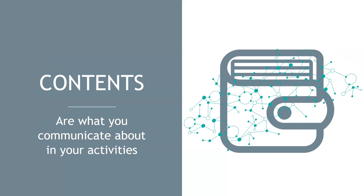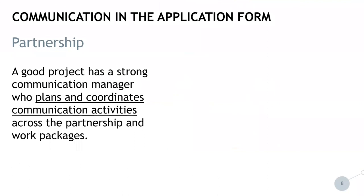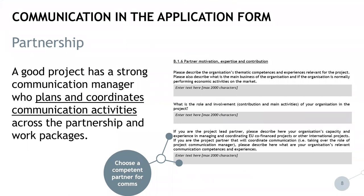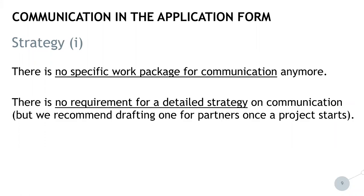Let's now take a closer look at the application form and how to plan relevant communications there. Good communication starts with having the right people in the right place to do so. The partnership should make sure to engage a strong communication manager who plans and coordinates communication activities across the partnership and work packages. You will have the chance to demonstrate this in the application form in chapter B1-6. Please choose a competent partner for your communications. The partnership does not have to develop a communication strategy anymore, at least not for us to check. We still recommend that at the beginning of the project the communication manager outlines planned communication activities for the whole project period. Please do not send us the strategy document anymore.